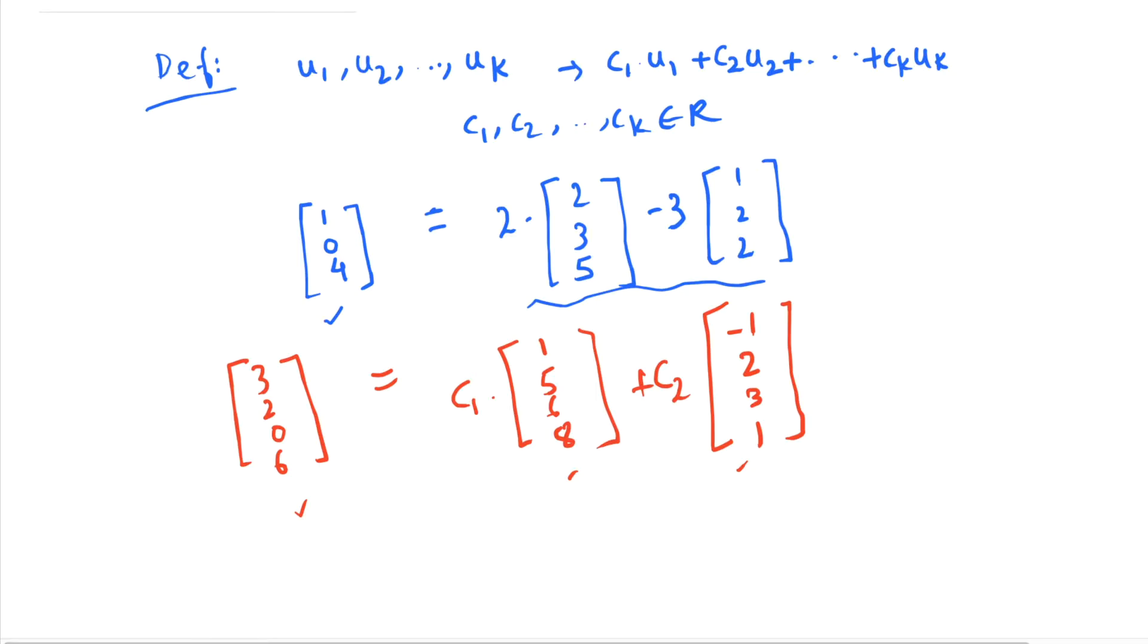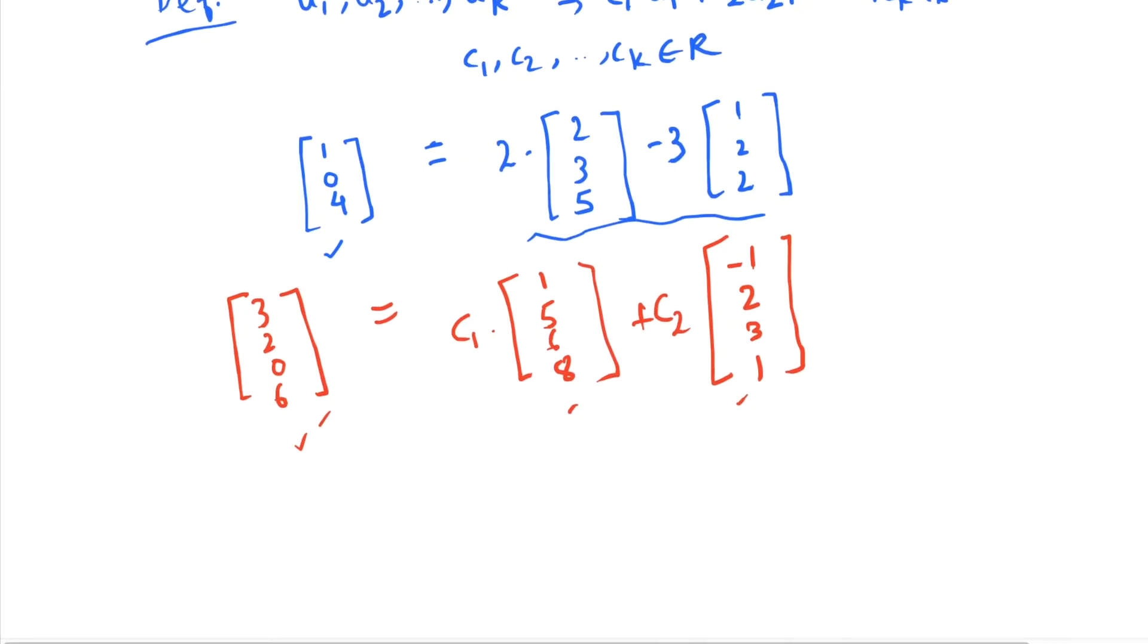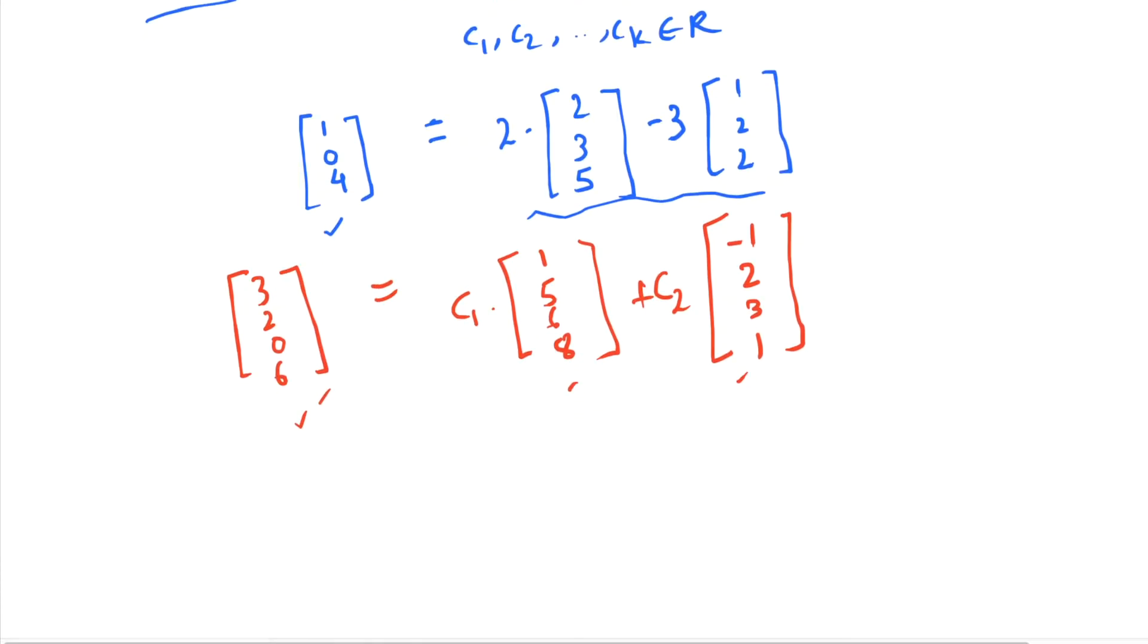plus c2 into this vector must result in this vector [3, 2, 0, 6]. So let me simplify the RHS here. By now, you know how we can simplify the RHS. So it will be c1 minus c2 and 5c1 plus 2c2, then 6c1 plus 3c2